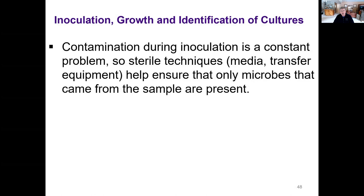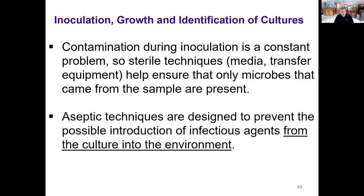We want to maintain whatever desirable bacteria we want in a given medium. Typically, we want a pure culture, which is a culture of a single species of bacteria. Not only do we want to avoid contaminants — other species of bacteria getting into our broth, slant, or plate — but we also want to be cognizant that we don't want to introduce pathogens into the environment. So we always want to avoid potential contamination, either of our culture or of our environment.